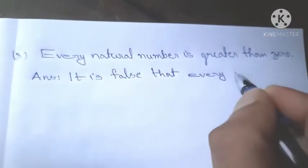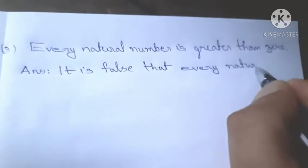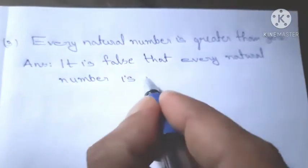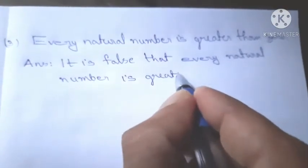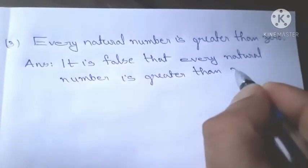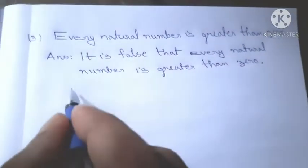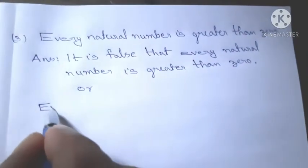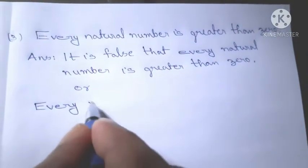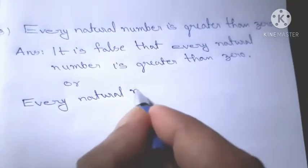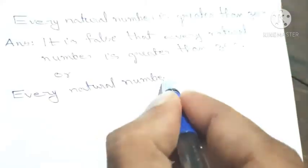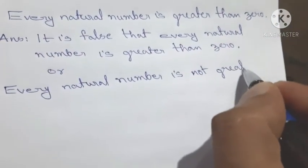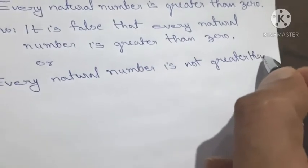Every natural number is not greater than 0. The negation: every natural number is not greater than 0.